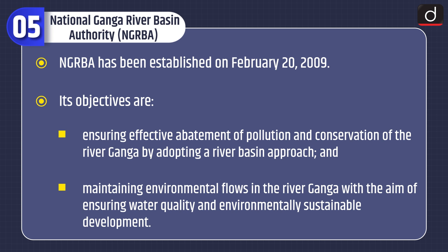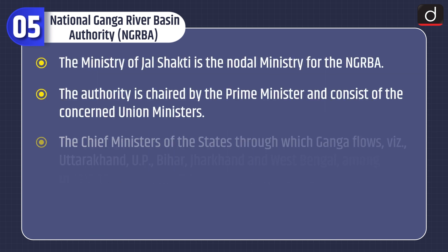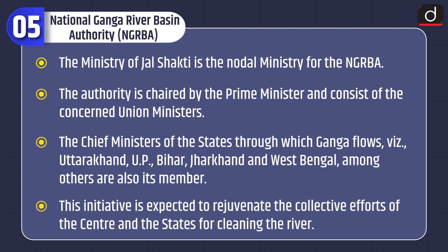The National Ganga River Basin Authority (NGRBA) was established on February 20, 2009. Its objectives are ensuring effective abatement of pollution and conservation of the river Ganga by adopting a river basin approach, and maintaining environmental flows in the river Ganga with the aim of ensuring water quality and environmentally sustainable development. The Ministry of Jal Shakti is the nodal ministry for the NGRBA. The authority is chaired by the Prime Minister and has the concerned Union Ministers as its members.